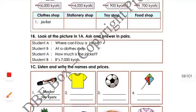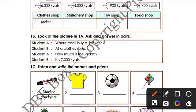We have different shops. There are clothes shops, stationery shops, toy shops, and food shops. You need to match each item to its shop.